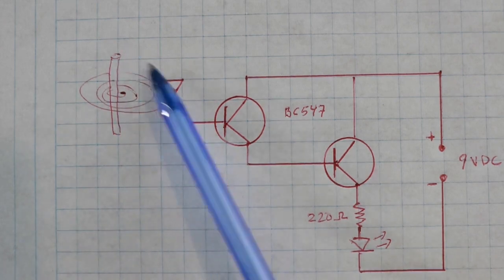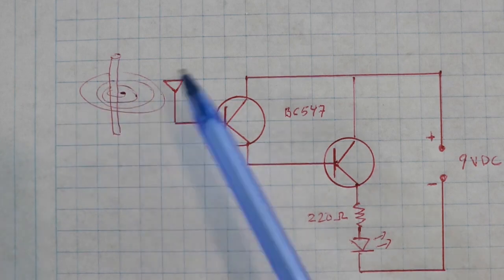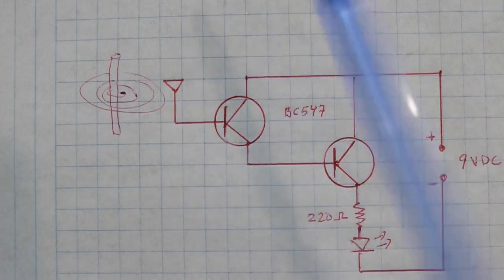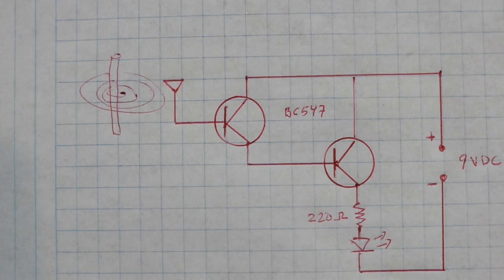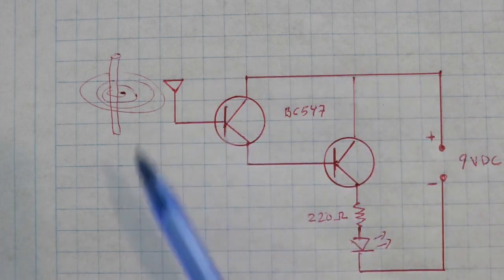DC current produces a fixed magnetic field that does not induce a current and hence it will not work. There are other types of circuits that work with DC current, but they are completely different.